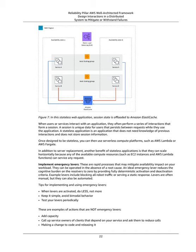Implement emergency levers: These are rapid processes that may mitigate availability impact on your workload, and can be operated in the absence of a root cause. An ideal emergency lever reduces the cognitive burden on the resolvers to zero by providing fully deterministic activation and deactivation criteria. Example levers include blocking all robot traffic or serving a static response. Tips for implementing and using emergency levers: when levers are activated, do less, not more; keep it simple and avoid bimodal behavior; test your levers periodically. Examples of actions that are not emergency levers include: adding capacity, calling up service owners to reduce calls, or making a change to code and releasing it.